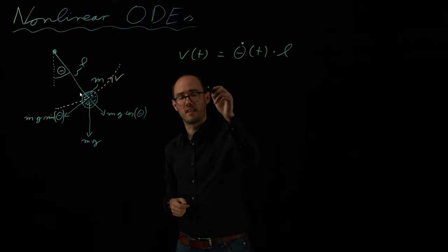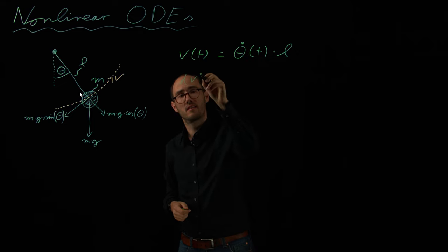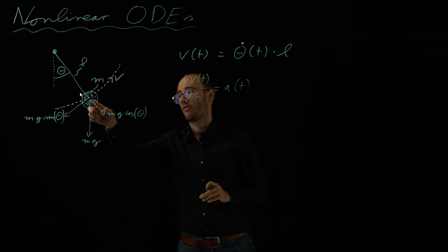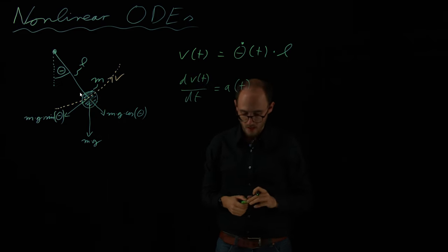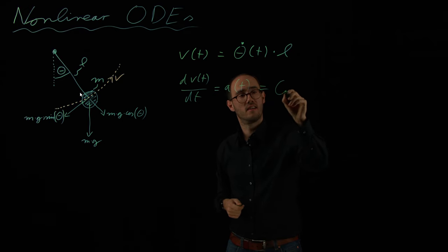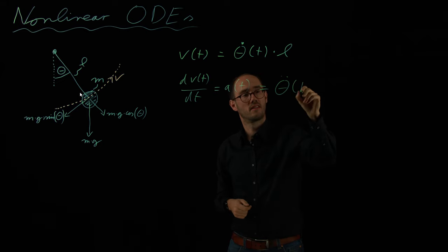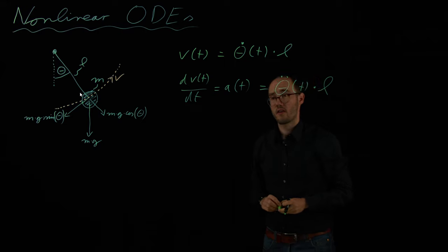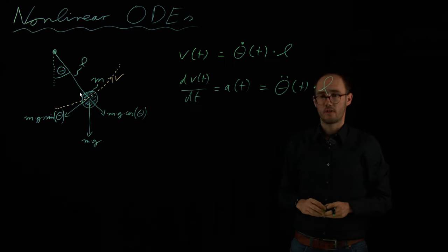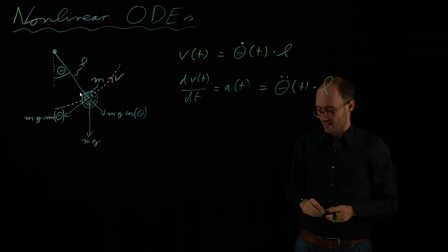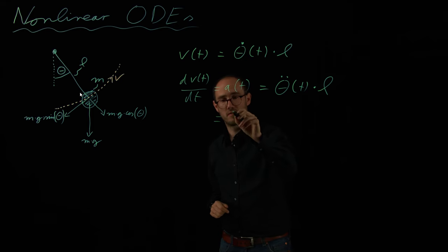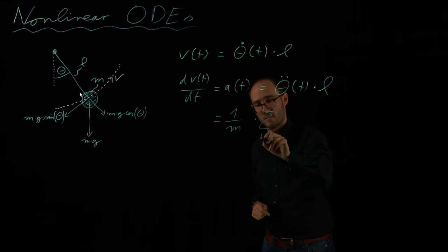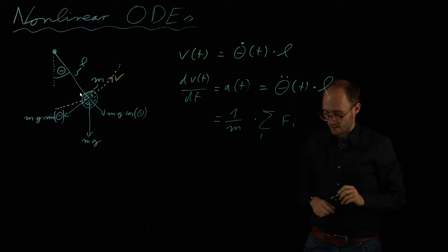Based on that, we can also calculate the acceleration. So we get dv/dt, which would be a of t. So the acceleration of this bob along this dashed trajectory would be the second order derivative of the angular velocity, because we have here d/dt times L. So far so good. However, from our previous lectures we have also learned that with simple Newton mechanics we can also express the acceleration as the sum of forces divided by the mass. So 1 over m, so the mass of this bob multiplied by the sum of forces acting upon that bob.